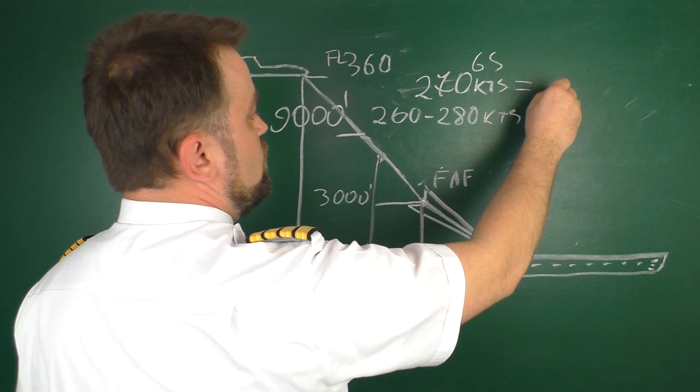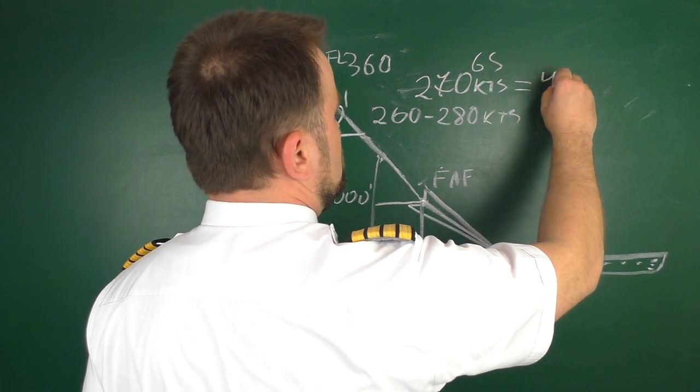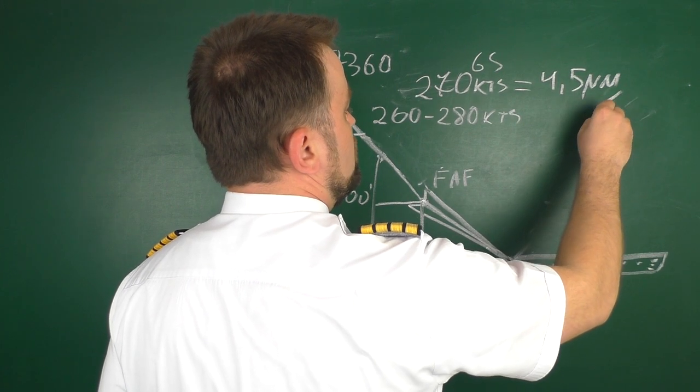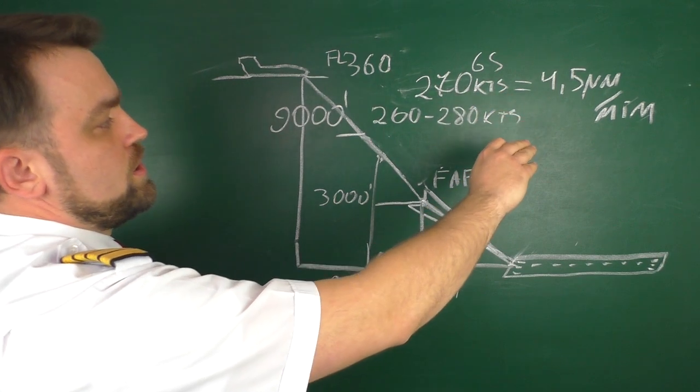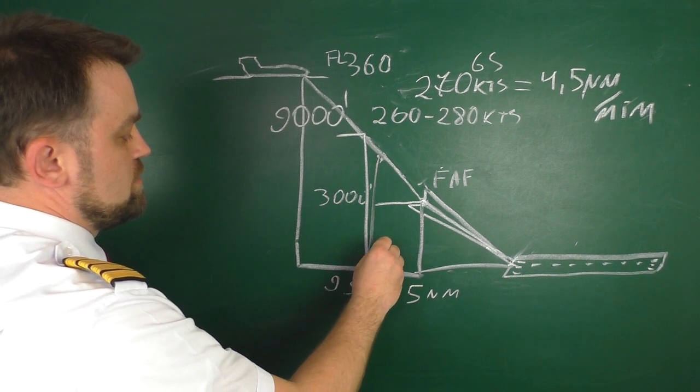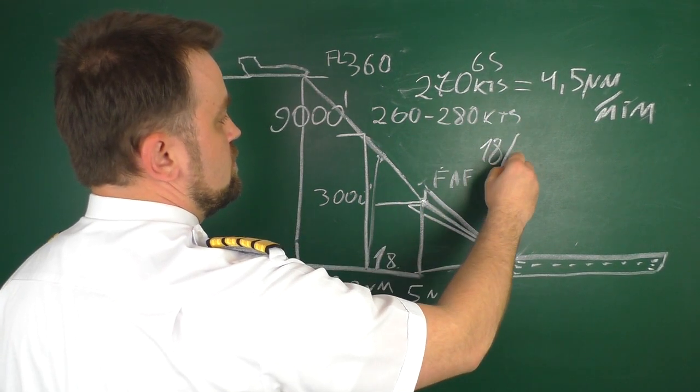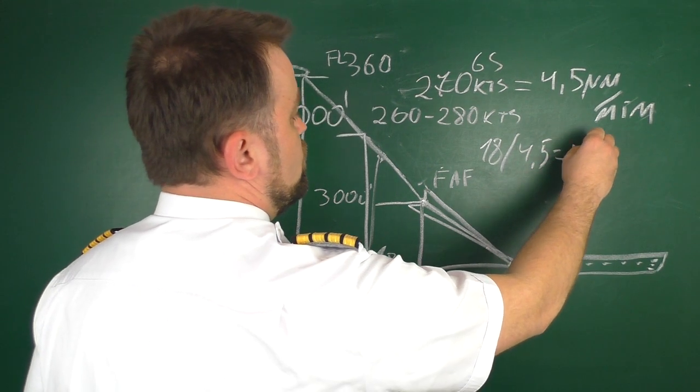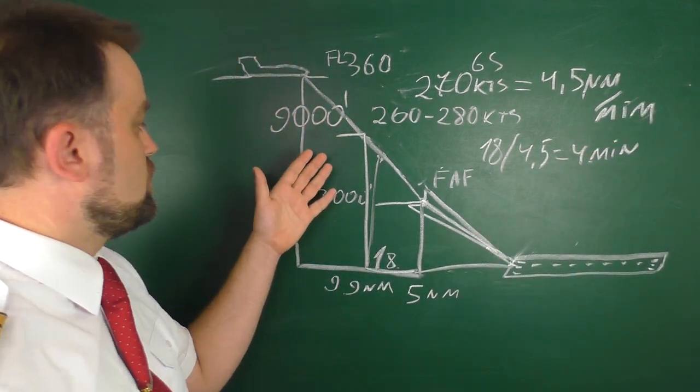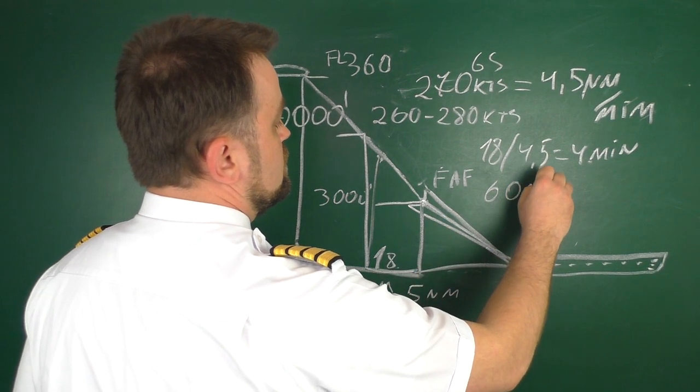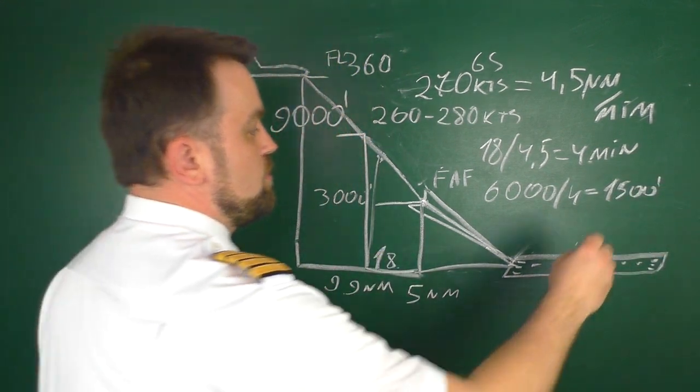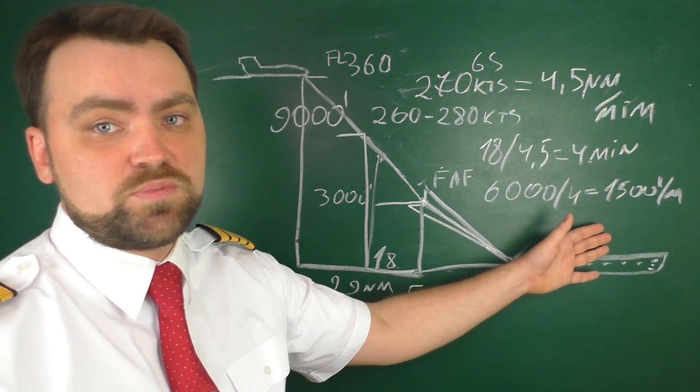However, if you are at lower levels you can calculate it. For example, if you are at 9000 feet and you maintain ground speed of 270 knots, you just wonder what vertical speed should you maintain to reach your final approach fix at 3000 feet. You need to convert this ground speed into miles per minute - that's around 4.5 nautical miles per minute. If you are 18 miles out, you can divide 18 by 4.5, which equals four. So you'll cover this distance in four minutes. In four minutes you need to lose 6000 feet. So 6000 divided by 4 equals 1500 feet per minute. That's the vertical speed you need to maintain to reach the final approach fix.